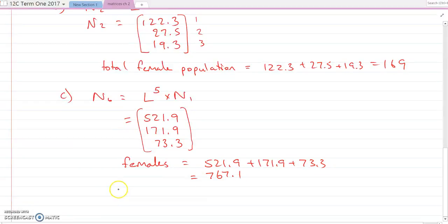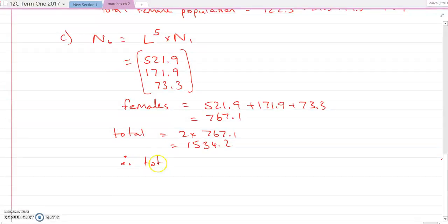So the total males plus females, it's just going to be two times that. 767.1 equals 1534.2. Therefore, total rat population in year six is 1534.